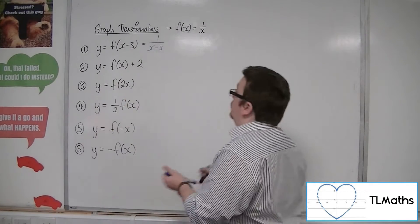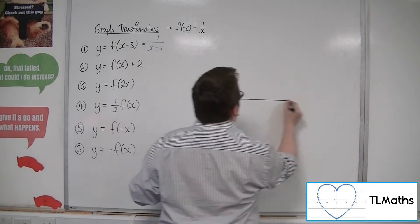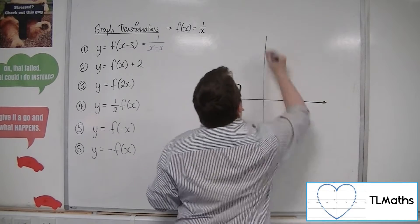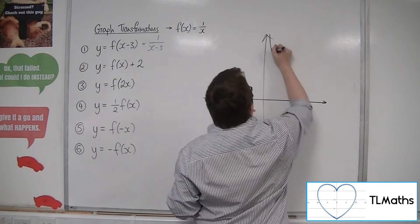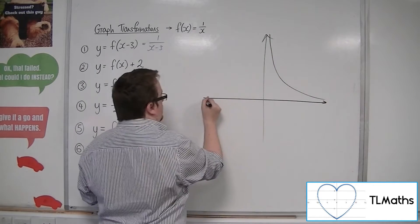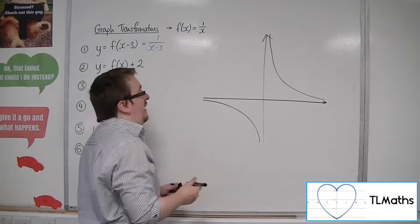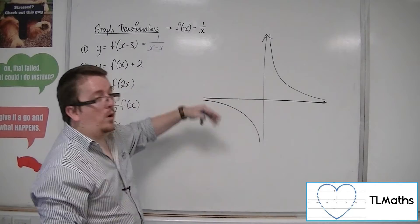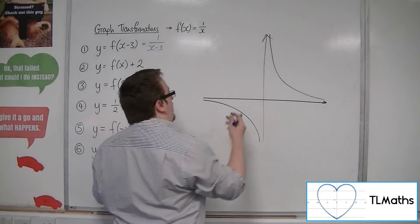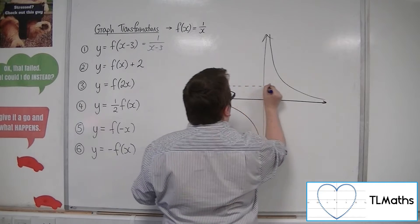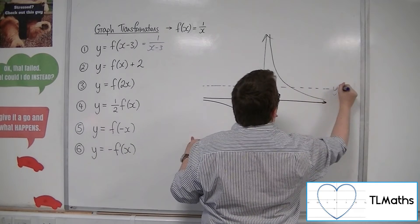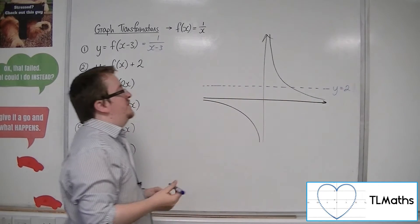f of x plus 2 translates the curve two units up. So, there is this asymptote. I'm just drawing the original curve first. There is this asymptote at y equals 0. And so, when I move the whole curve up, the asymptote goes up as well. And so, there is now an asymptote of y is equal to 2.